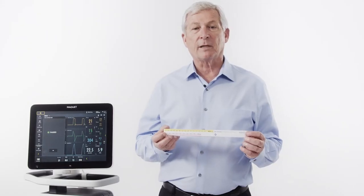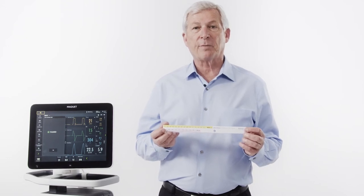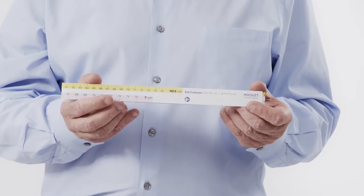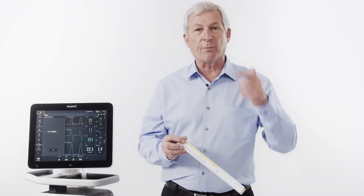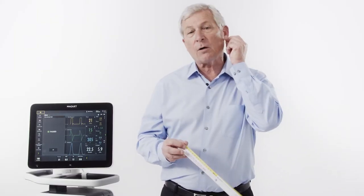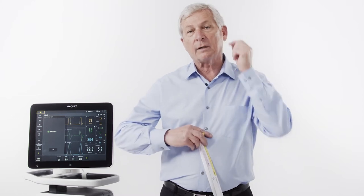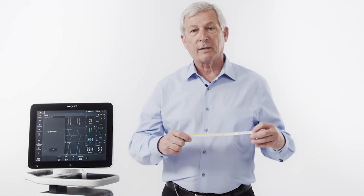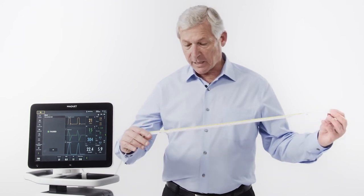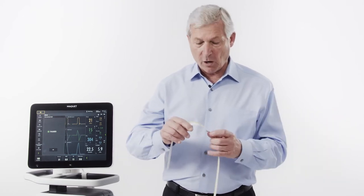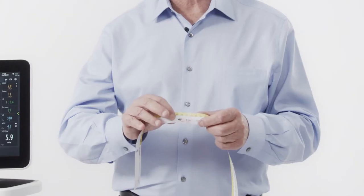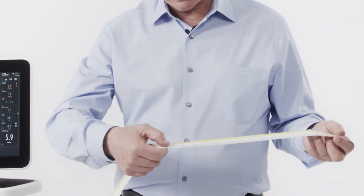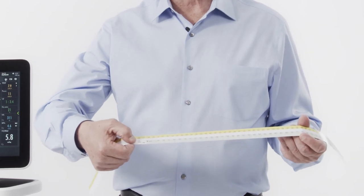Now that we've selected the proper catheter, it's time to determine to what distance the catheter should be inserted. We do this with a NEX measurement — a measurement from the bridge of the nose to the earlobe to the top of the xiphoid. We can accomplish this by using a tape that comes with the EDI catheter, which has a measurement on it. This also helps us whether we're inserting via the mouth or through the nose, and will tell us the exact length to insert the catheter.